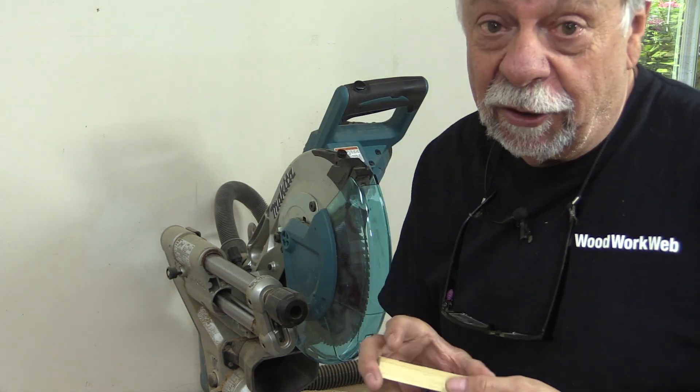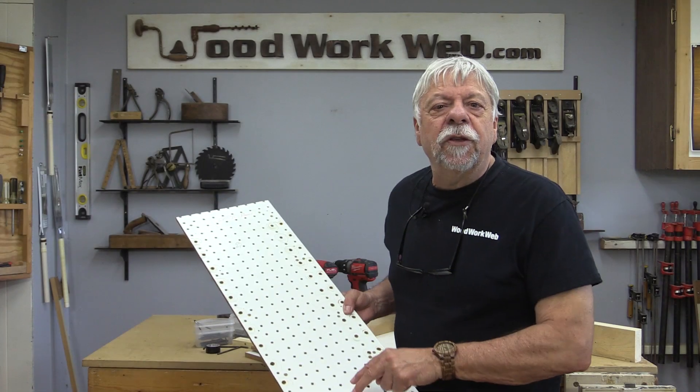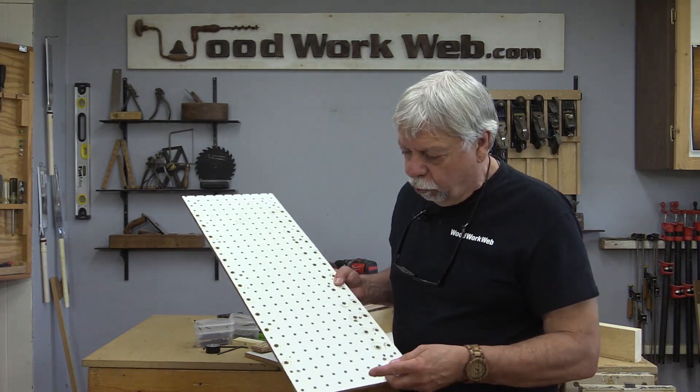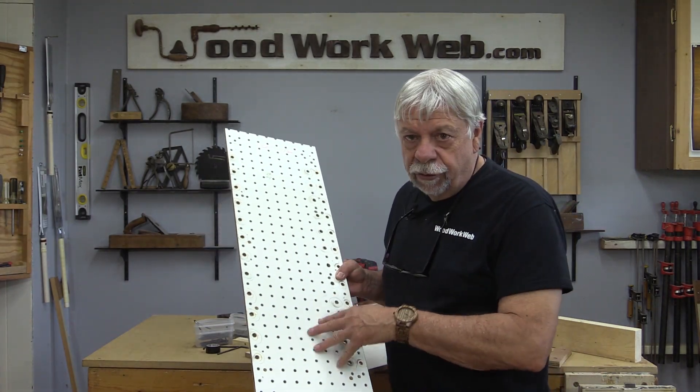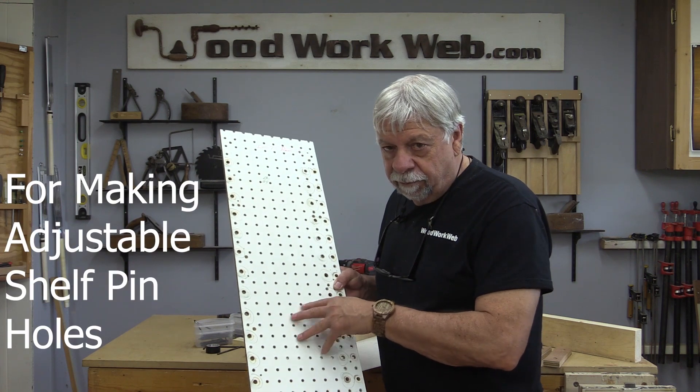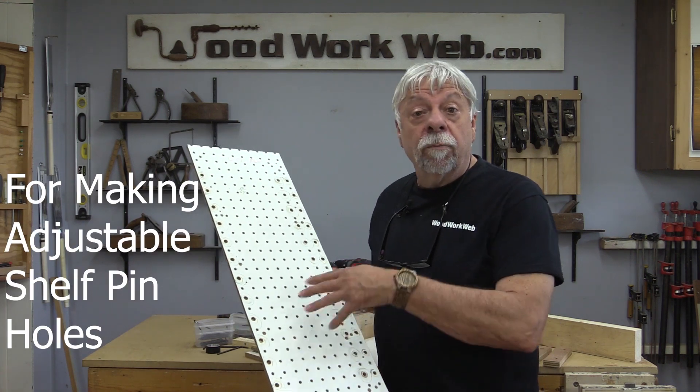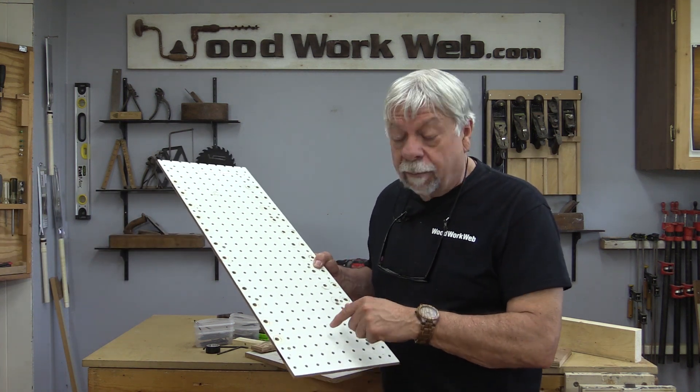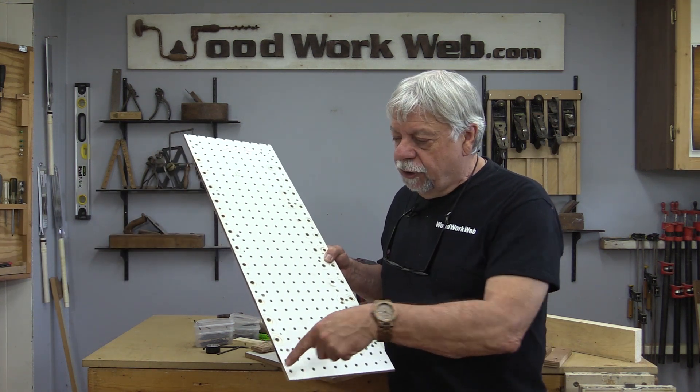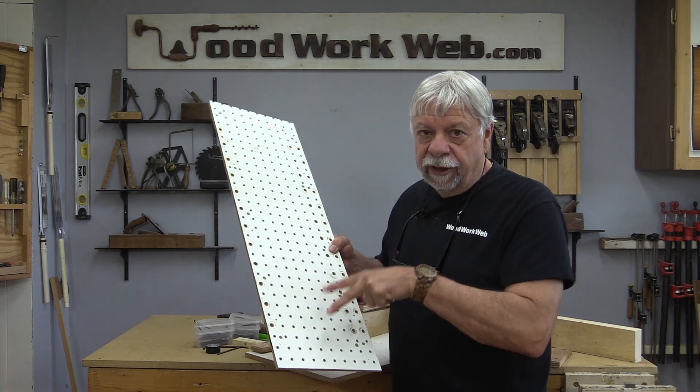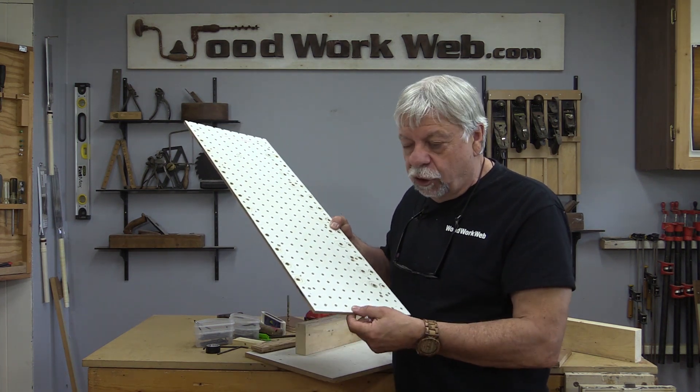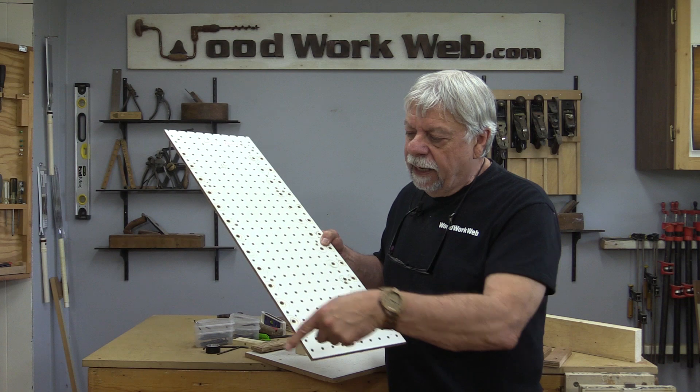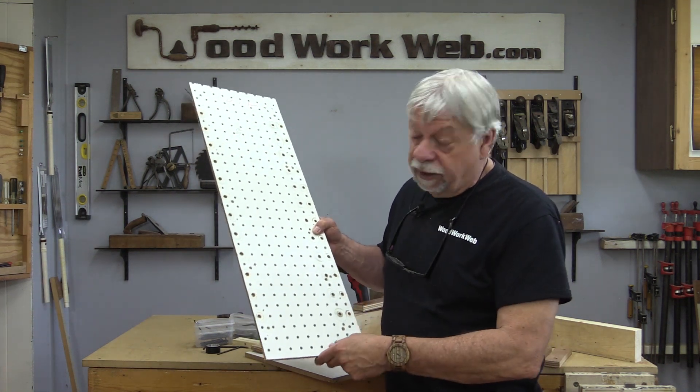This tip was sent in by James from Florida. James uses this pegboard material for making his own shelves. What James uses, and I didn't know this was available, you can actually purchase squares of this material in steel. It's a 20 gauge, so it's fairly light, and it's 16 inches by 16 inches, perfect for making shelves using the holes.